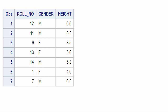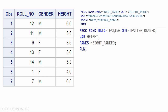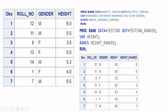Here is the sample dataset we will be using. It has the roll number of each student, their gender, and height. We want to generate ranking based on height. After executing the code, the output shows that rank 1 is given to the student with the least height and rank 7 (the maximum) is given to the student with the maximum height. This is the default ranking, but you can reverse it.